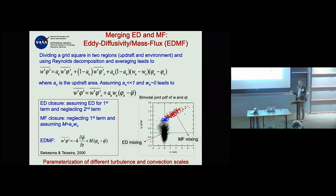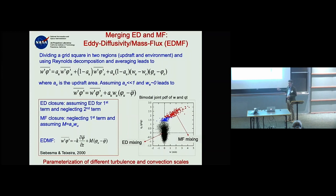This distribution has two sides: the quiet Gaussian part of the atmosphere, and the very active part where vertical velocities and water content are very high — that is what the mass flux represents.